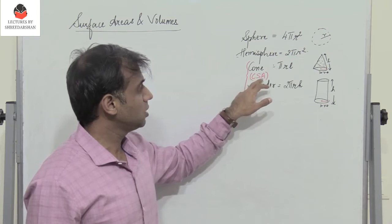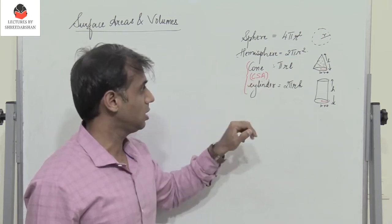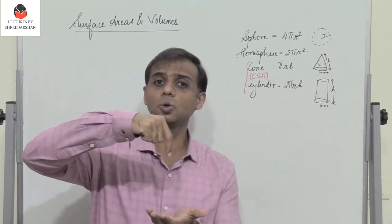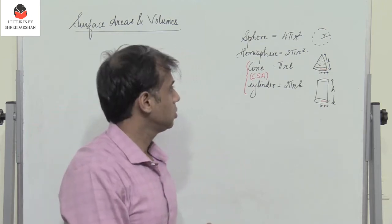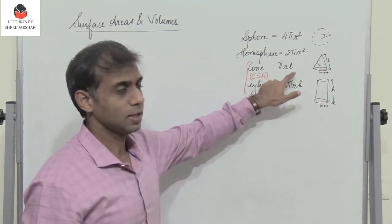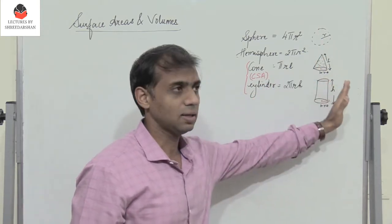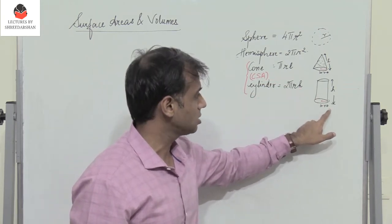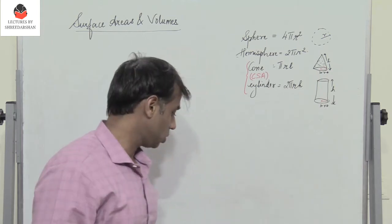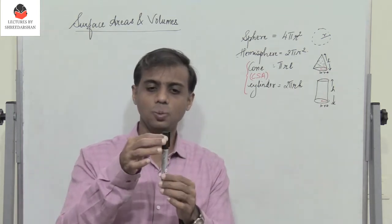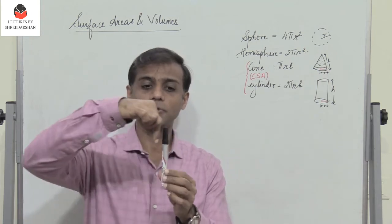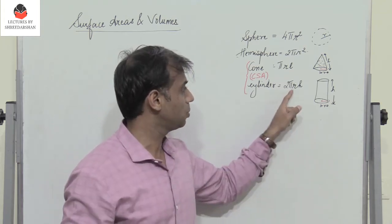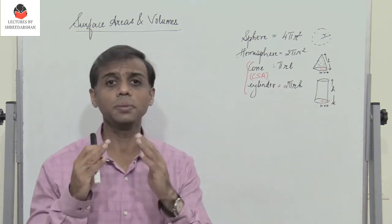When we talk about curved surface area, CSA stands for curved surface area. The curved surface area of a cone is πrl, where r is the radius of the base and l is the slant height. For a cylinder, the curved surface area is 2πrh, where r is the radius of the base and h is the height — we find just the curved area, not the base. So the curved surface area is 2πrh.